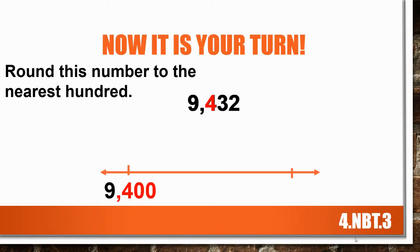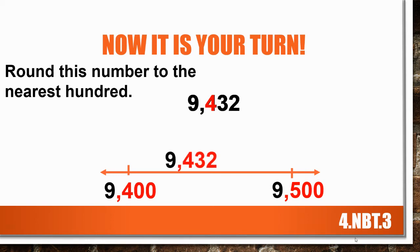If I'm looking at the hundreds, 400 falls before 432. What comes after it? You're right, 500. So it's between 9,400 and 9,500. Let's place 9,432 on the number line. So is it closer to 9,400 or 9,500? You're right — 9,400.